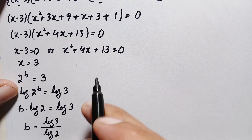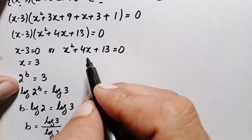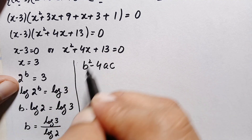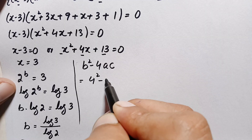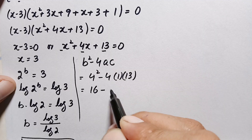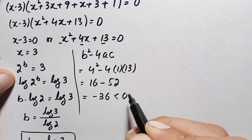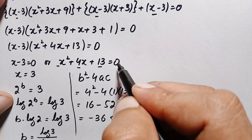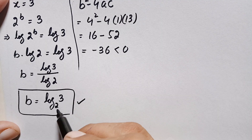Now we check whether the quadratic x squared plus 4x plus 13 equals 0 has real roots using the discriminant formula: D equals b squared minus 4ac. Here b equals 4, a equals 1, c equals 13, so D equals 16 minus 52 equals negative 36, which is less than zero. Since the discriminant is negative, the roots are complex, so we reject this solution.